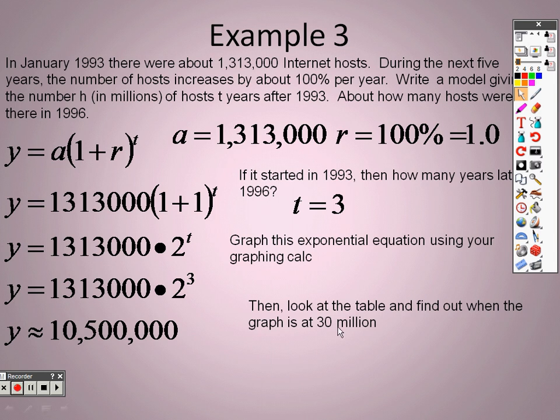What I want you to do now is look at the table and find out when the graph is at 30 million. So we're going to go to second graph and look at our list. We're going to try to find where 30 million is, and we find out that 30 million is about 4.5.